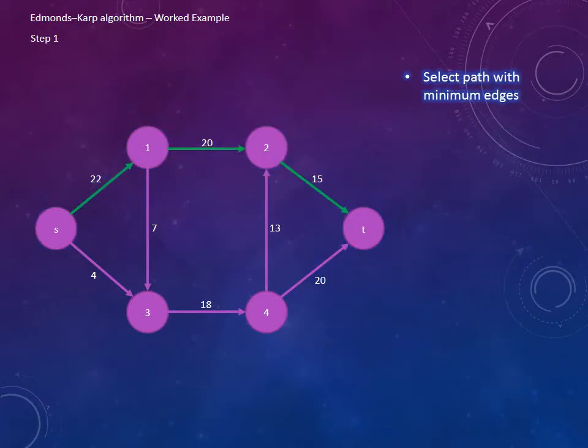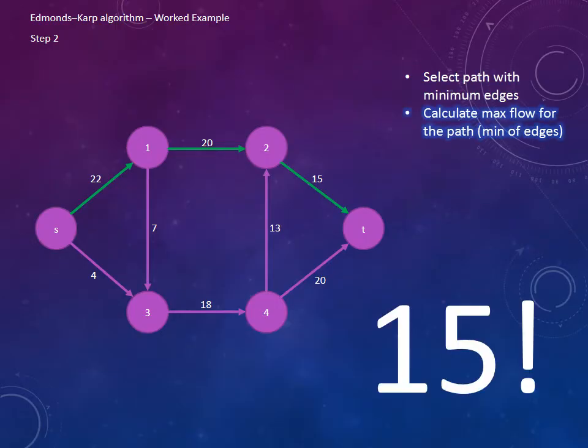Now we'll discuss the rest of the algorithm. The first step is to select the path with the minimum edges, which is done via the process just shown. The next step is to calculate the maximum flow for this path. This is done by finding the edge with the minimum value. In this case, the edge with the minimum value is 15.